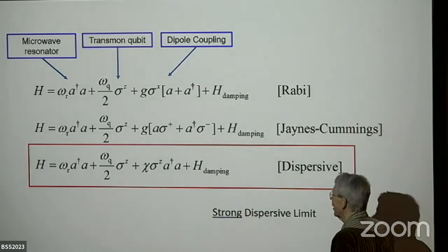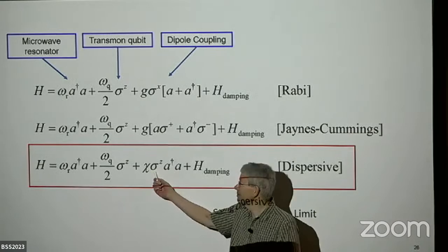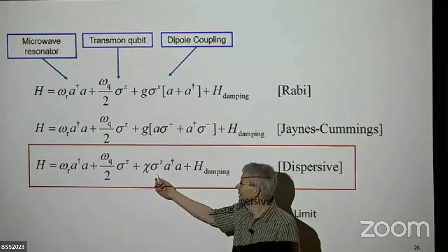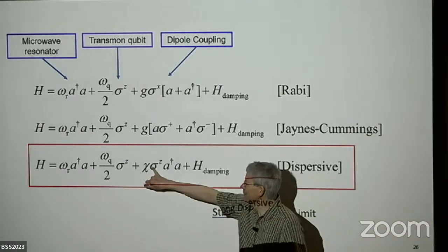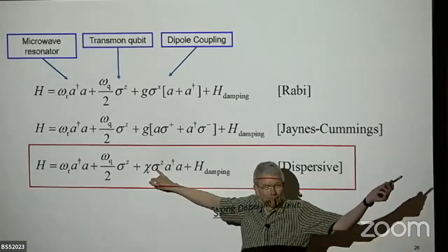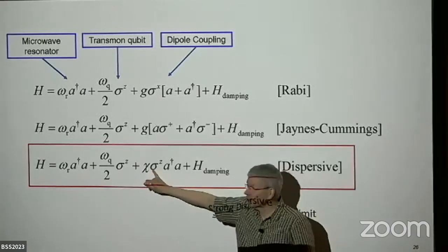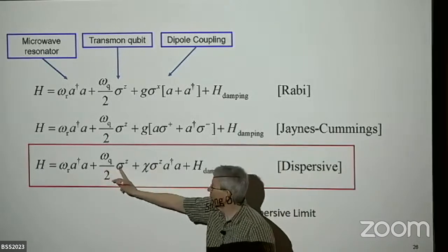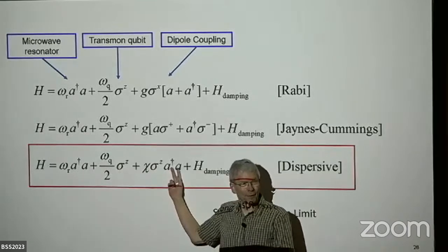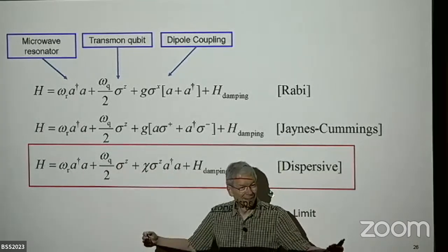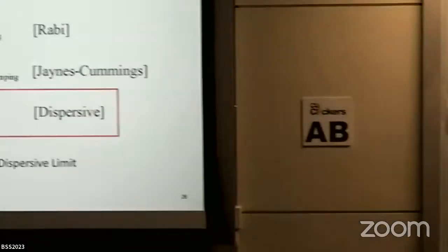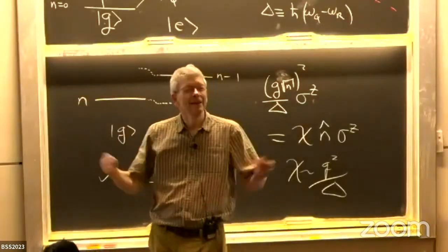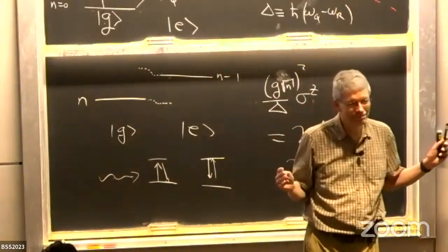This dispersive Hamiltonian commutes with σ_Z (the qubit state operator) and with the photon number in the cavity — it's QND. It doesn't change either of those things. But if the frequency of the cavity depends on the state of the qubit, I can just measure the frequency of the cavity and get a qubit readout. Conversely, the frequency it takes to excite the qubit depends on the number of photons in the cavity — it has a light shift. So measuring the qubit spectrum tells me how many photons are in the cavity. Together with drives on the qubit and cavity, this gives universal control of the combined system.